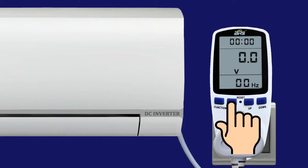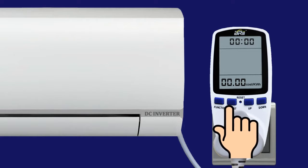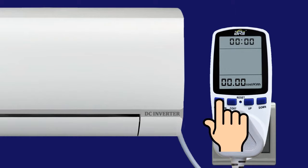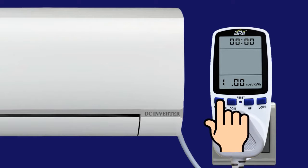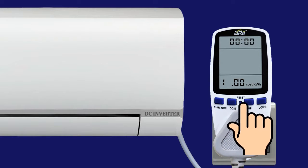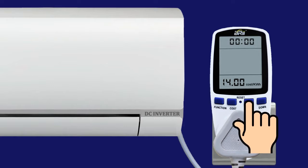To set the cost per unit, press cost button for 1-2 seconds. Press function button right after pressing the cost button. Now press up and down to set the first digit. Again press function button to select the next digit. Set it with up and down button. Press cost button again to finish.